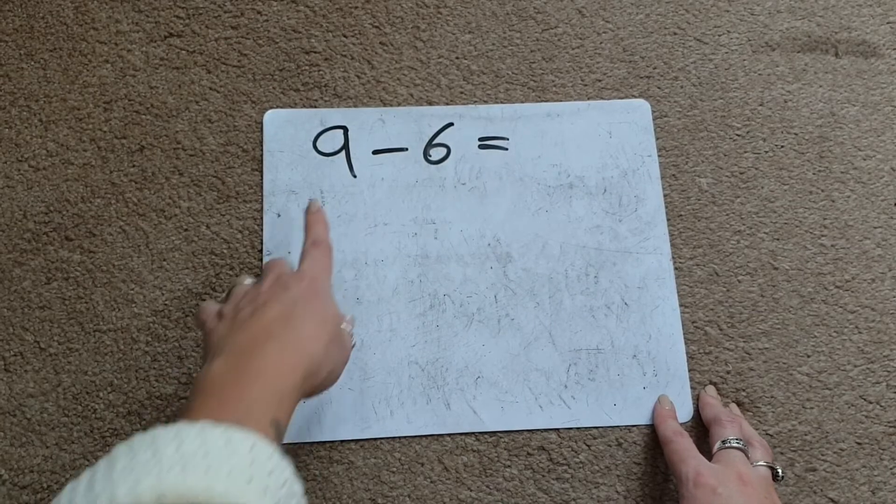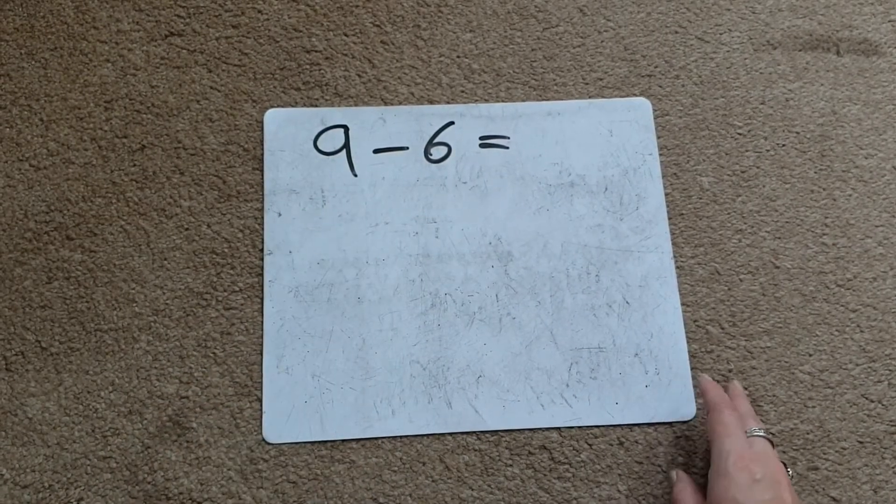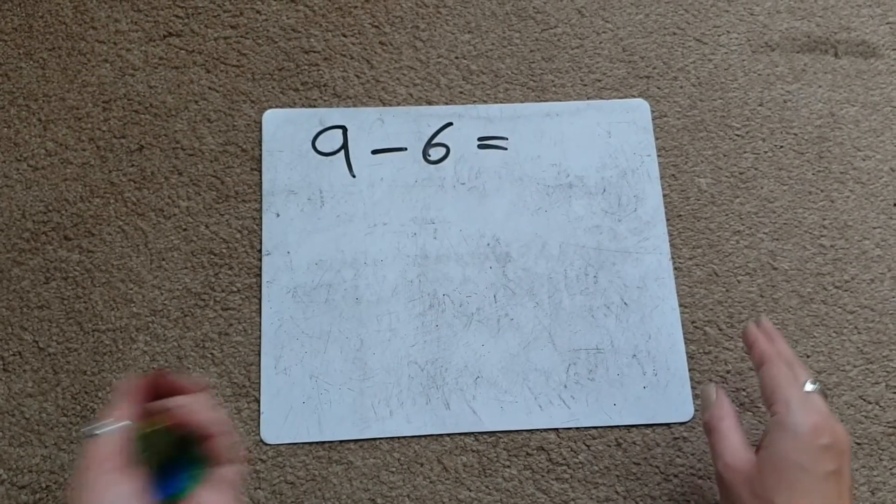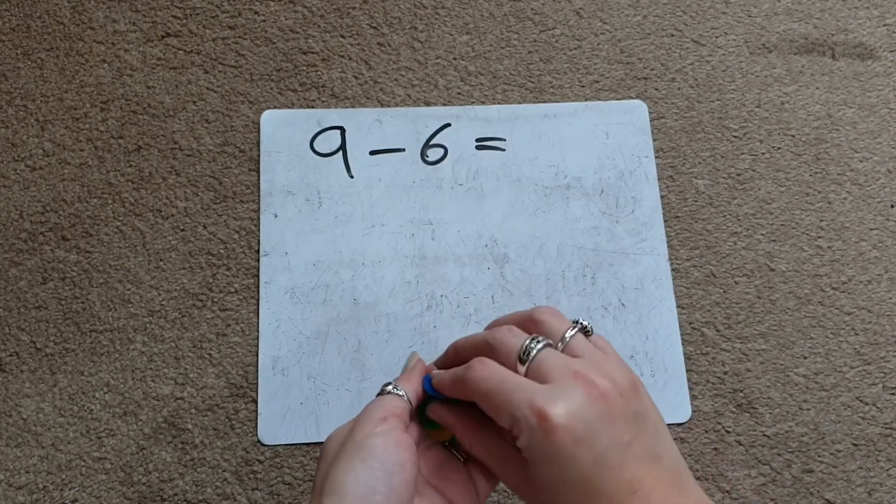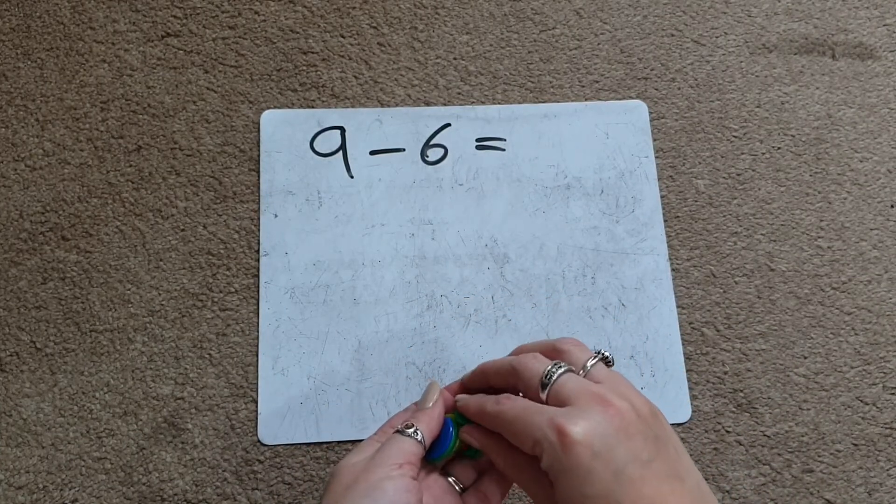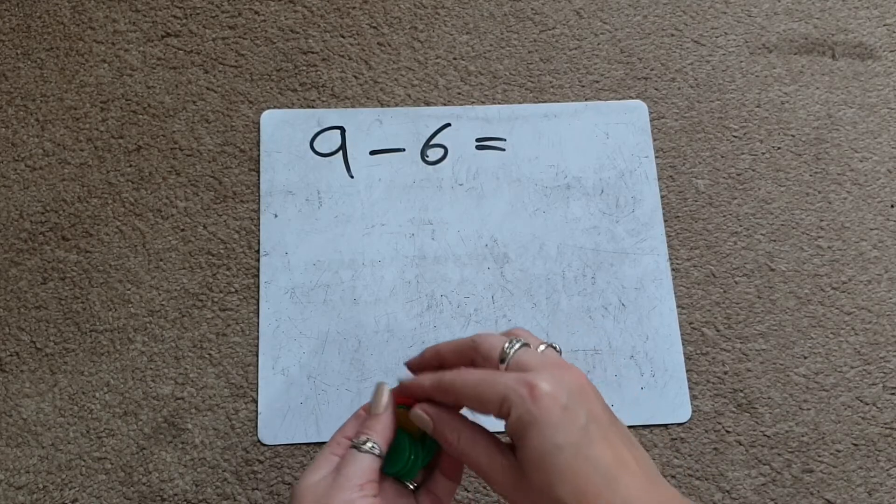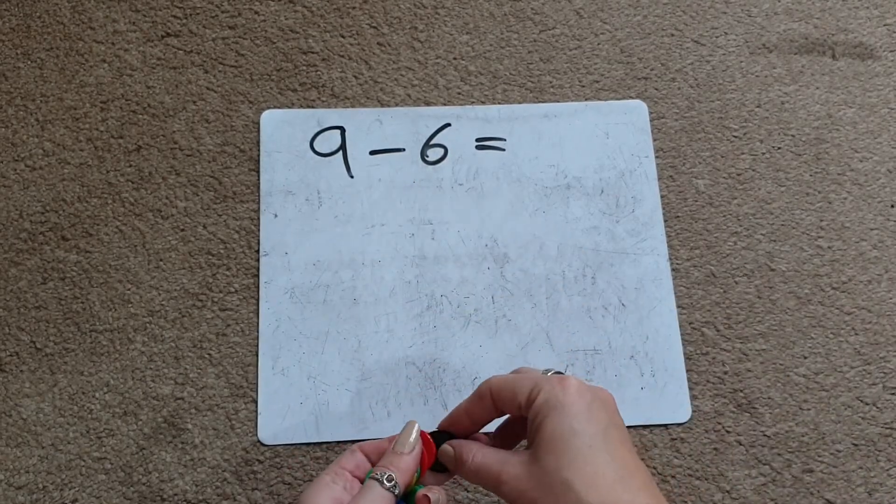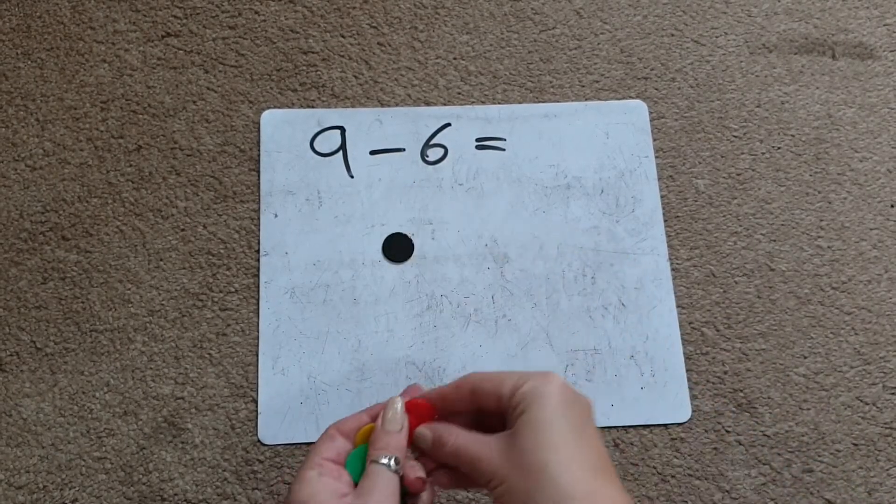So I would ask them to count out 9 objects. Today I'm going to be using counters. You can use things like buttons, cubes, even things like pasta, things you can find around the house or around your classroom.